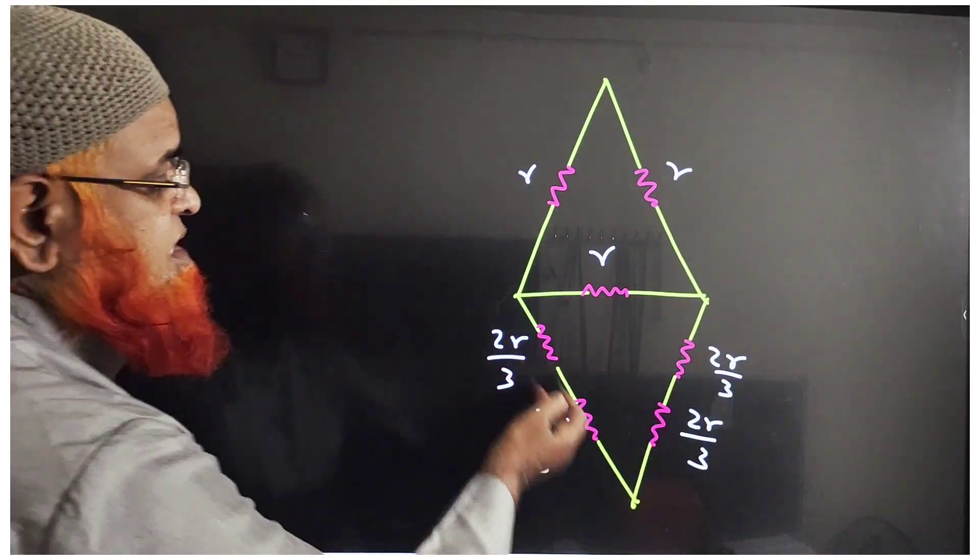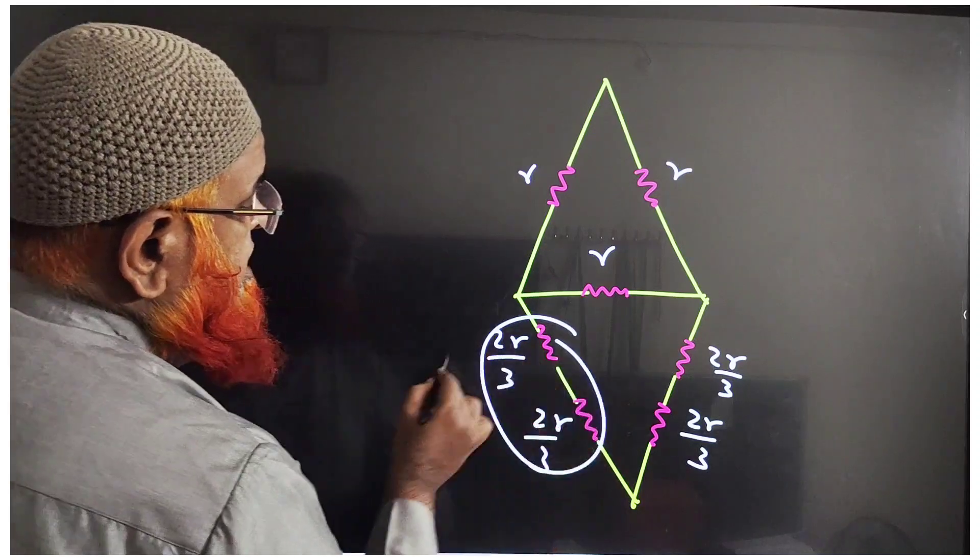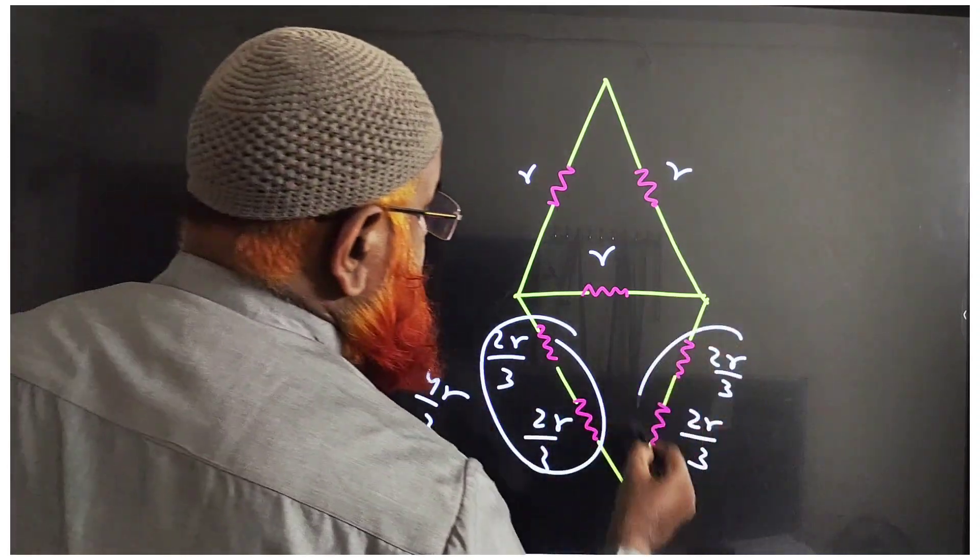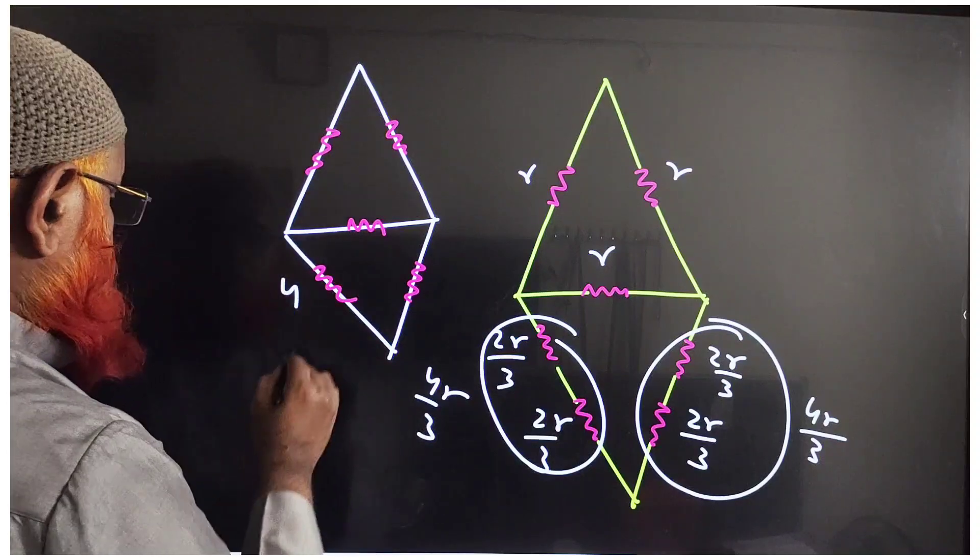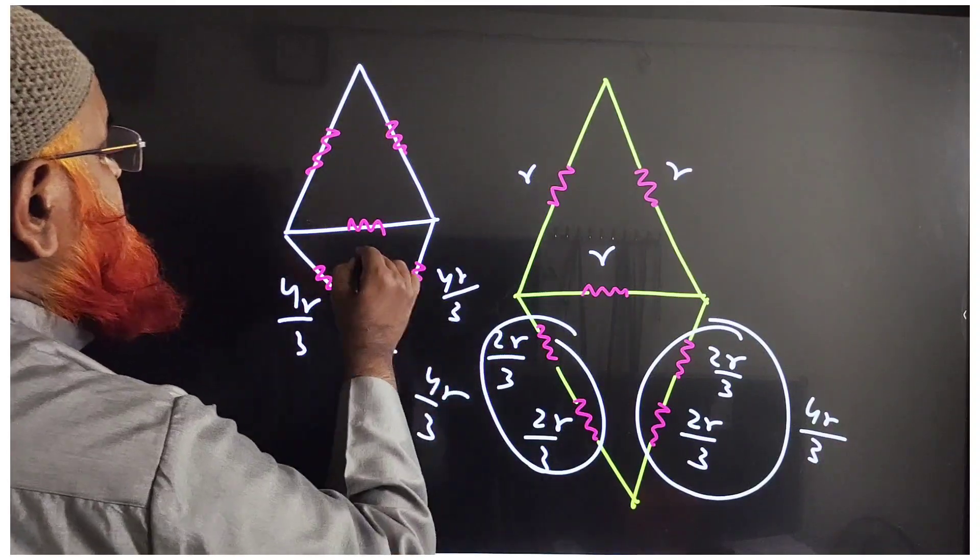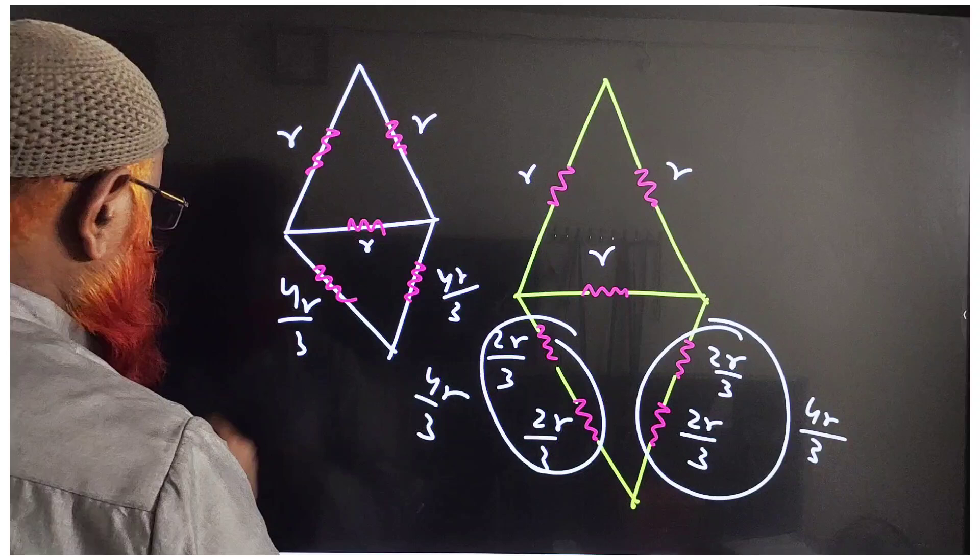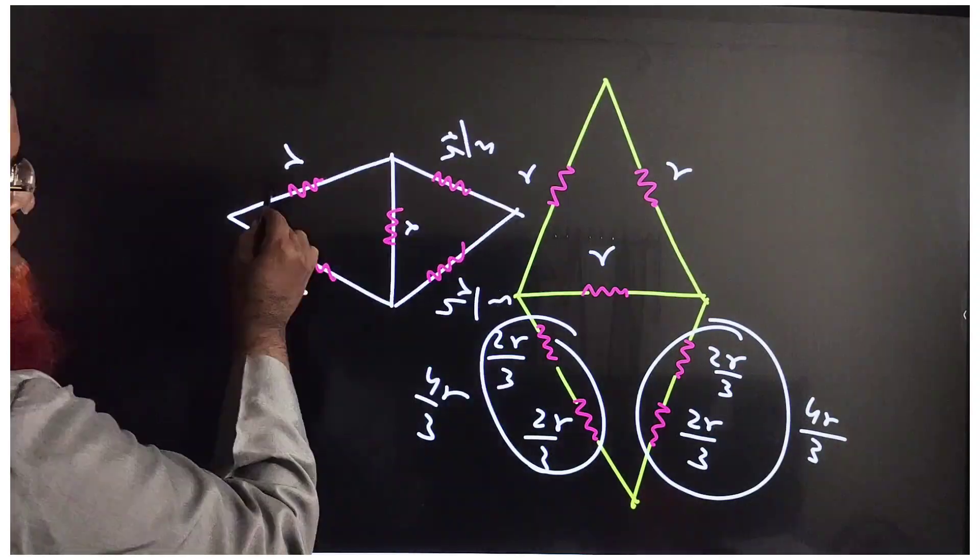So 2r by 3, 2r by 3, 2r by 3 are in series here. This combined together is going to be 4r by 3. This side is 4r by 3, this side also 4r by 3. This is r and this is r. So I can make this diagram like this.